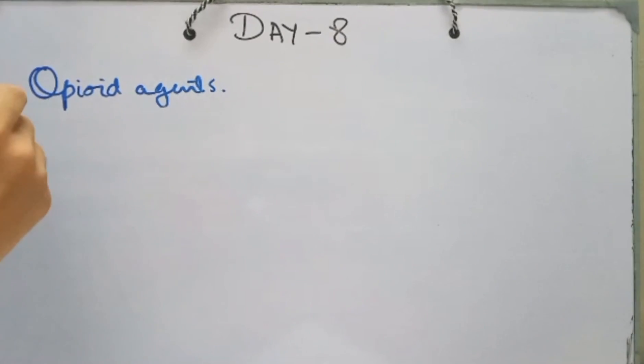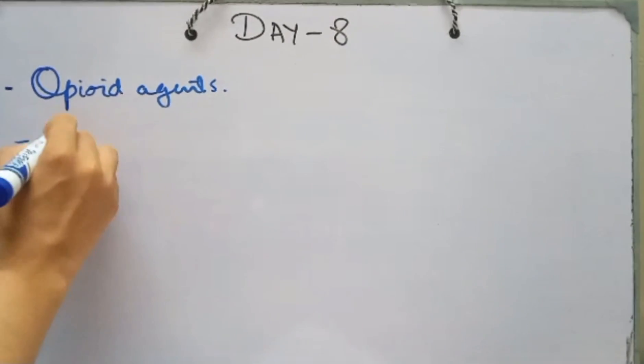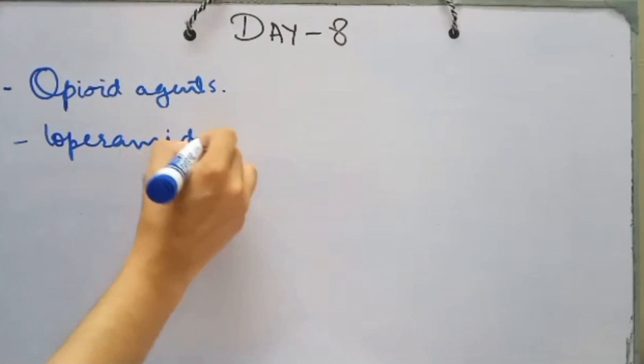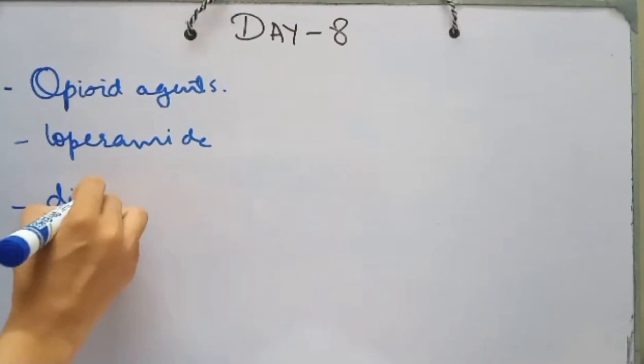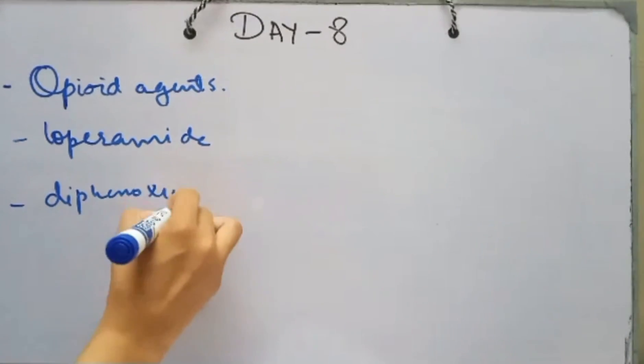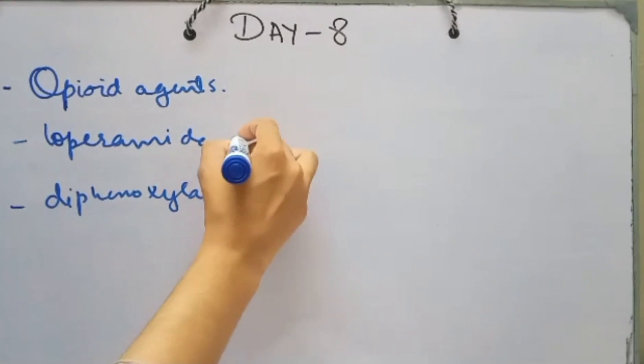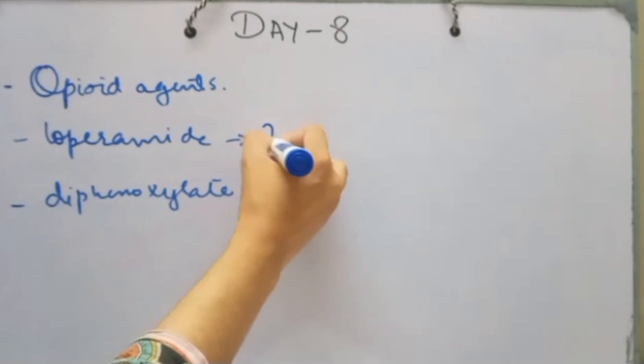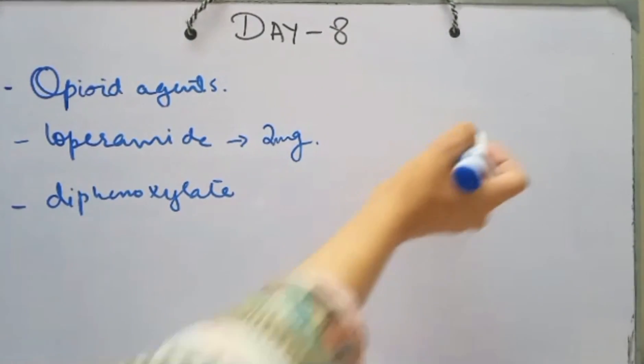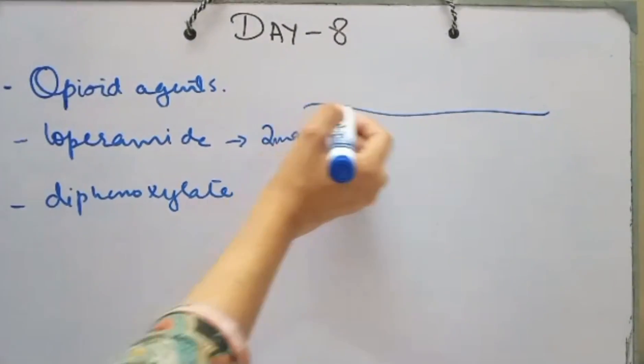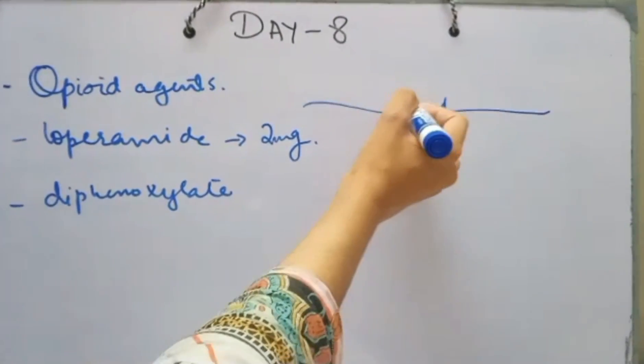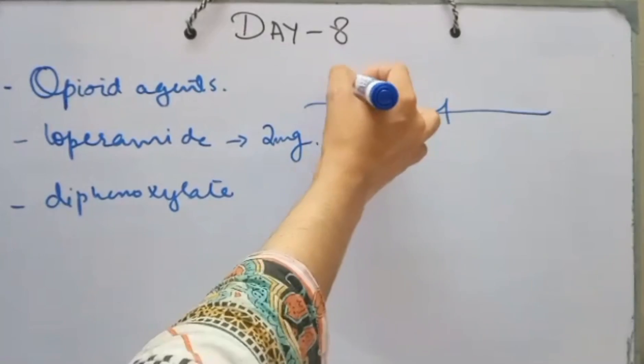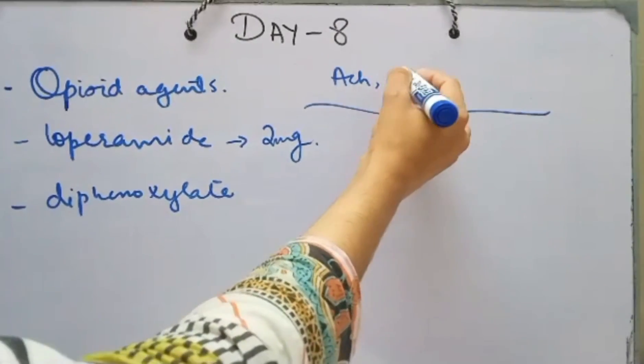Loperamide is a non-prescription drug used to treat diarrhea. The dose is 2 milligrams. It acts on the gut wall receptors, blocks acetylcholine release and prostaglandin release.